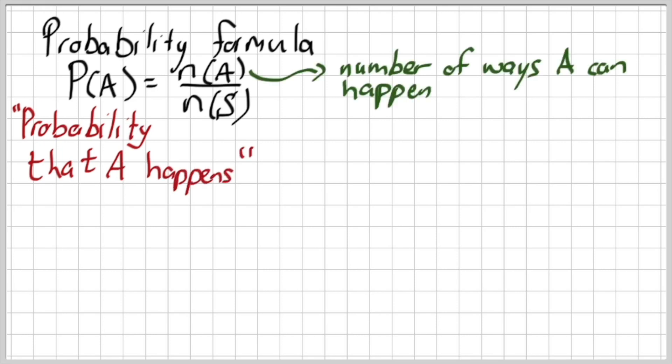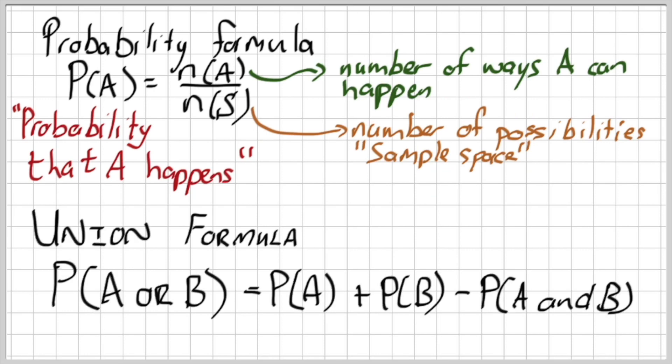And then we also have N of S, which is the sample space, which means all possibilities that are possible. So that is sample space. We saw that in the previous video when we looked at the Venn diagram.